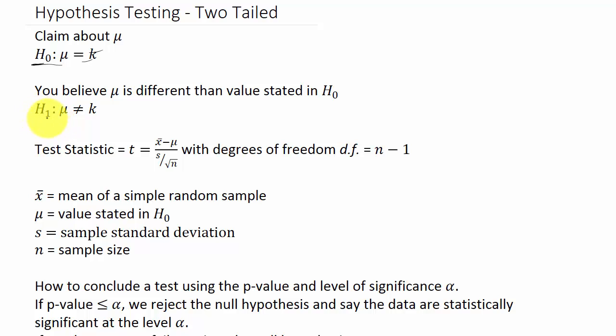The alternate hypothesis H₁ is that mu is not equal to k. When sigma is unknown, we do not know the population standard deviation, so our test statistic is a t-value using the Student's t-distribution. The test statistic is t = (x̄ − μ) / (s / √n), with degrees of freedom equal to n − 1. Here, x̄ is the sample mean, μ is the value in H₀, s is the sample standard deviation, and n is the sample size.